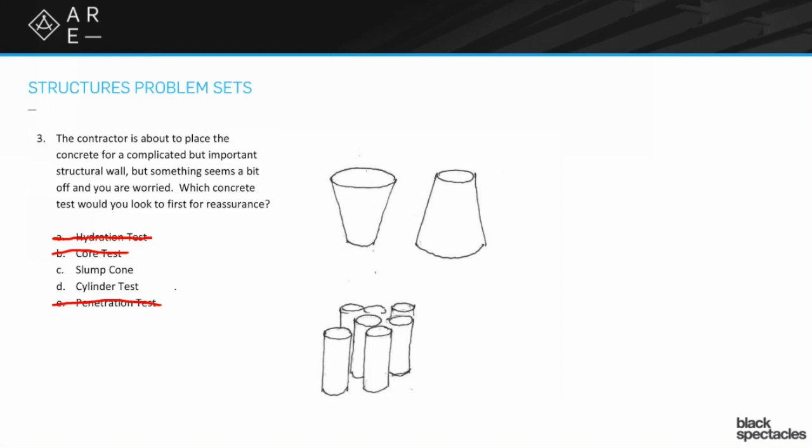The slump cone test is where you just have this sort of cone-shaped formwork piece and it's about 12 inches tall. And you put a bunch of the concrete from a particular truckload that's coming in, it's about to go into place. And then you flip the cone over and you lift the cone off and you just sort of see how much does it slump down. So if it had a big slump and it like puddled, let's say it slumped down 10 inches or something, that means it's probably way too watery. And it's going to have cracking problems. It's going to have the capacity lowered.